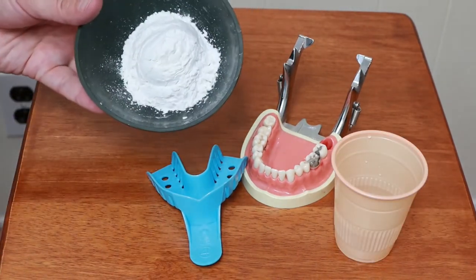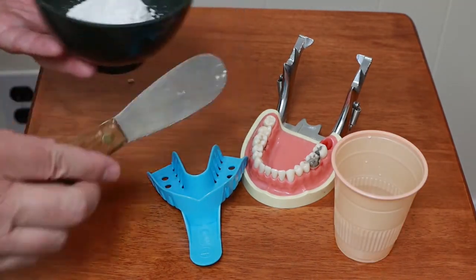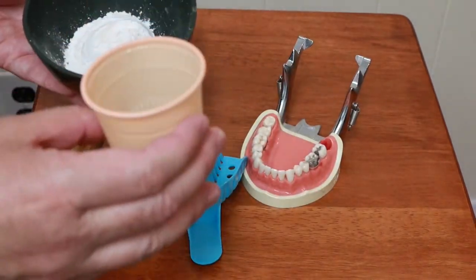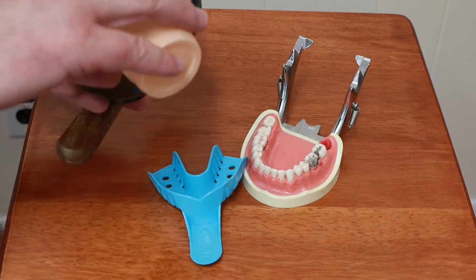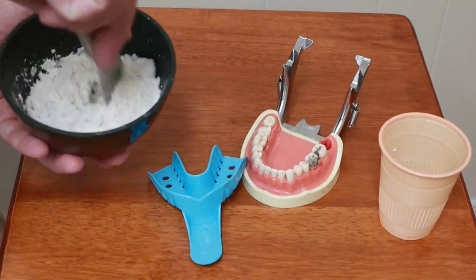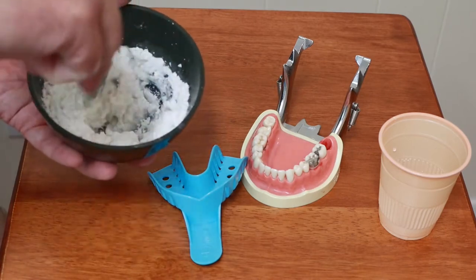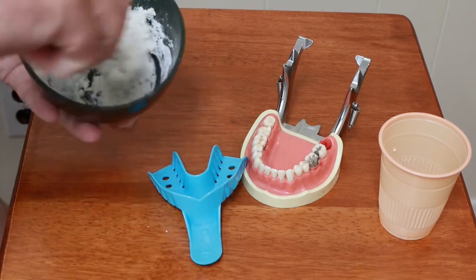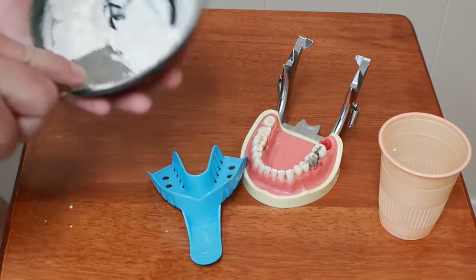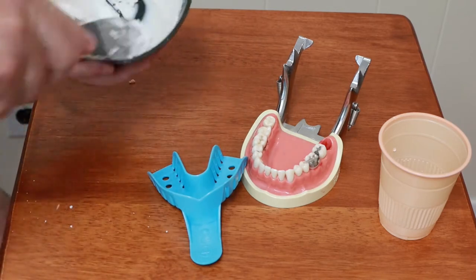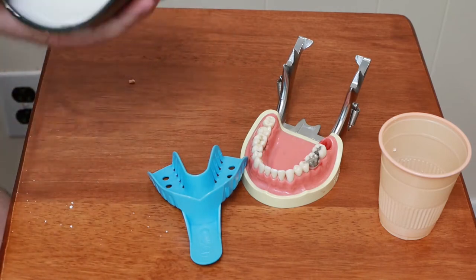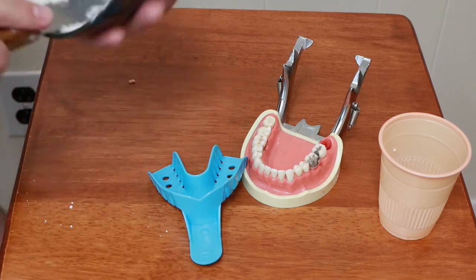The alginate material is just a powder that you mix up. This is a pre-measured amount of water that goes with the three scoops of powder that I have in here. Add the water to the powder, just mix it up. Get it nice and creamy. Make sure all the powder is incorporated into the mix. Smush it against the edge of the bowl to force any air bubbles out of the mix.